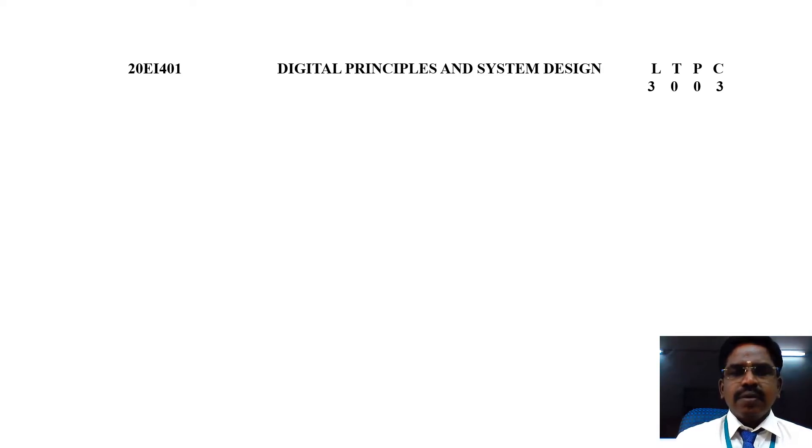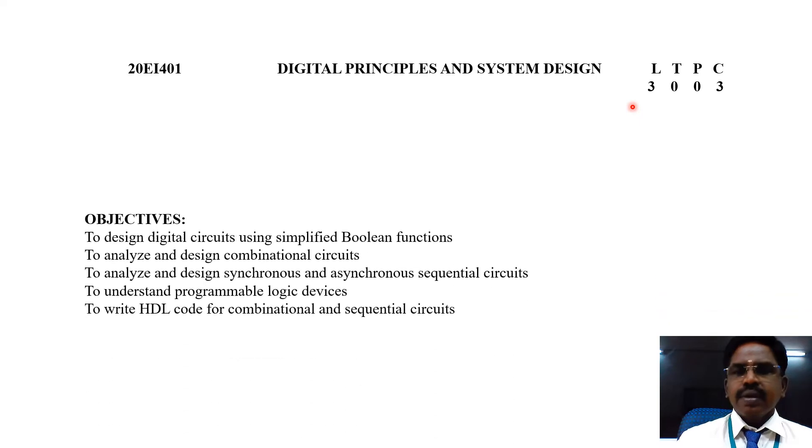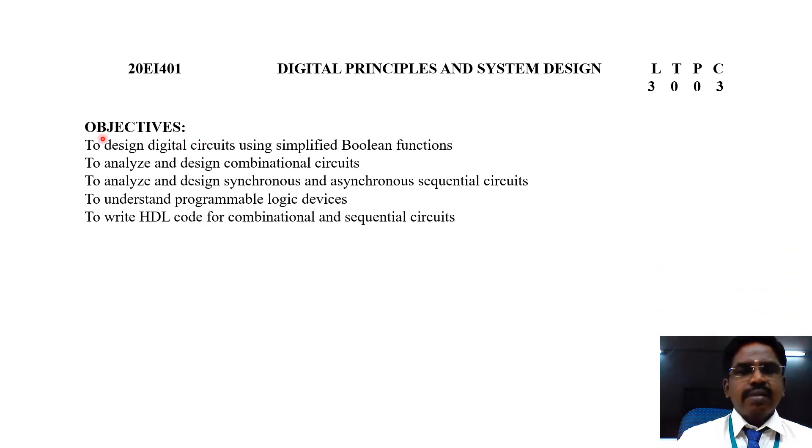Students, now we are going to see what are the contents available in this course. The course code is 20EI401 and course name is Digital Principles and System Design. It is a 3 credit course. So, the lecture hour will be 3. Next, the objectives of this course.